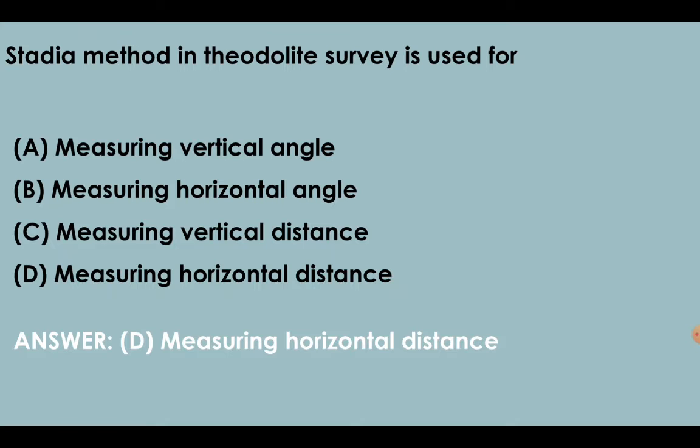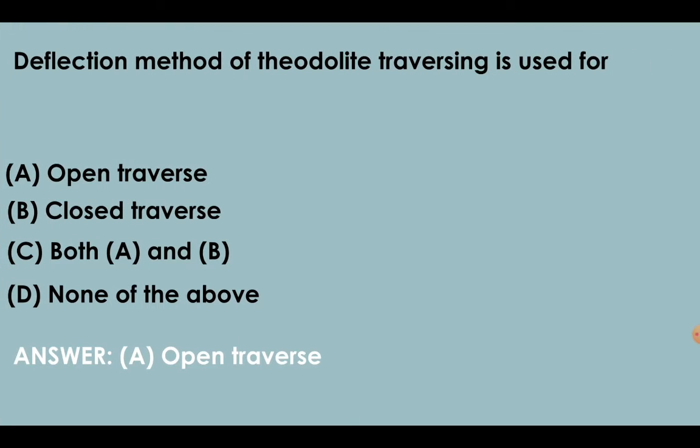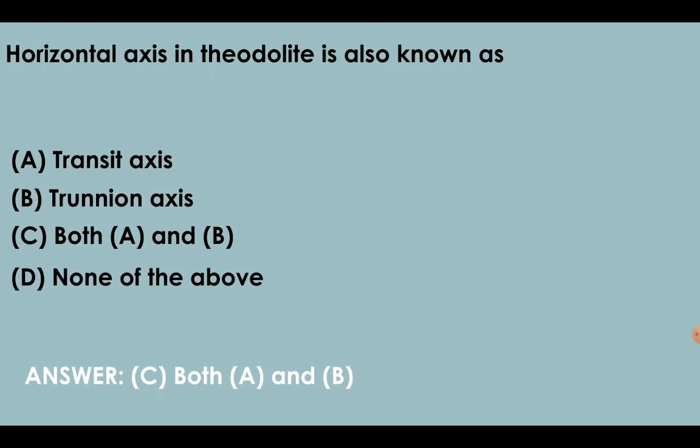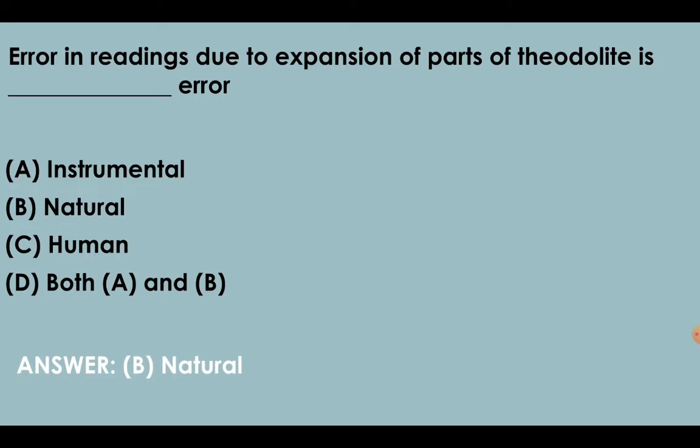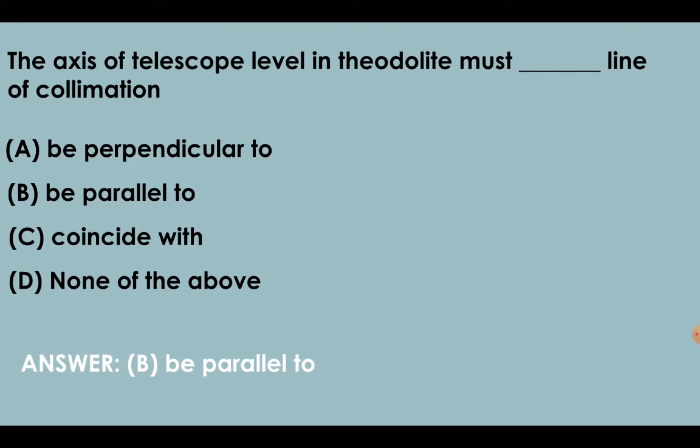Stadia method in theodolite survey is used for measuring horizontal distances. Deflection method of theodolite traversing is used for open traverse. Horizontal axis in theodolite is also known as transit axis and trunnion axis. Error in reading due to expansion of parts of theodolite is a natural error. The axis of telescope level in theodolite must be parallel to the line of collimation.